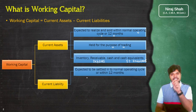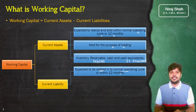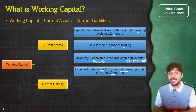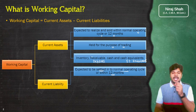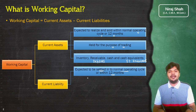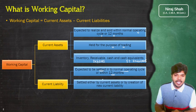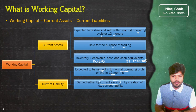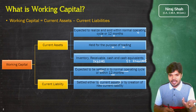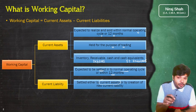Current liability ऐसी liability होती है जो settle होने वाली है normal operating cycle of the business में, या maximum within 12 months इस liability को settle कर दिया जाएगा। Current liability को settle किया जाता है या तो current assets के through — जैसे आपके पास cash था, उस cash से आपने अपने creditor को payment कर दिया।